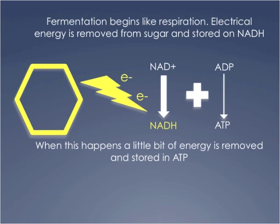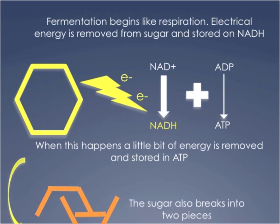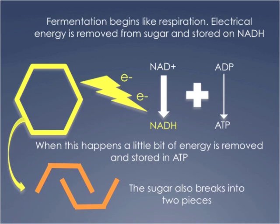Not as much ATP is made as in aerobic respiration — this is a very skinny arrow — you're making just a little bit of ATP. The electrons end up on NADH. Also, when you take the electrons away from glucose, you're breaking a chemical bond, since chemical bonds are made of electrons. This cuts the glucose in half — that's why this is called glycolysis. Lysis means to cut, glyco means sugar. So glycolysis is the cutting of the sugar, removing some energy from glucose and cutting it in half.